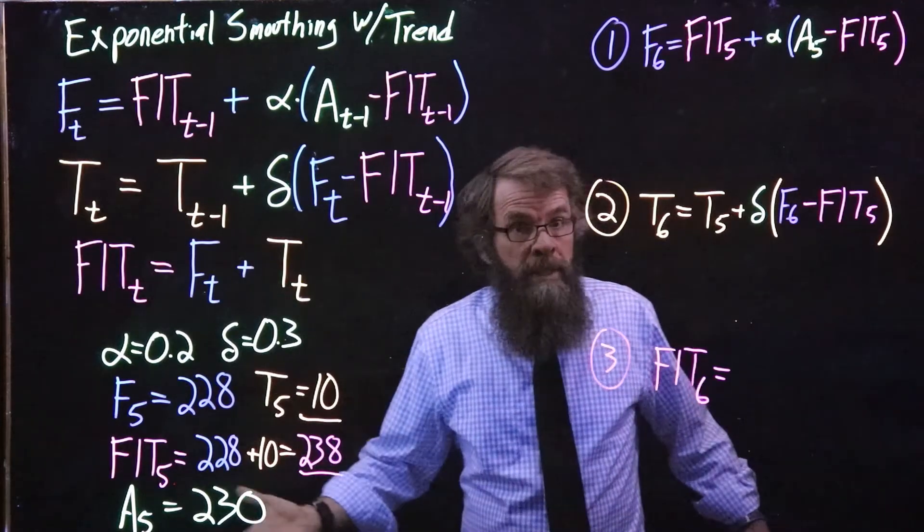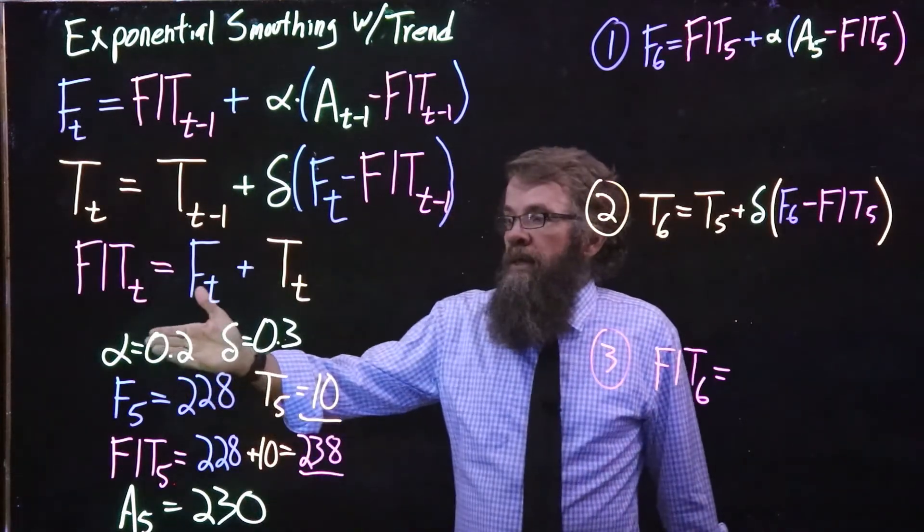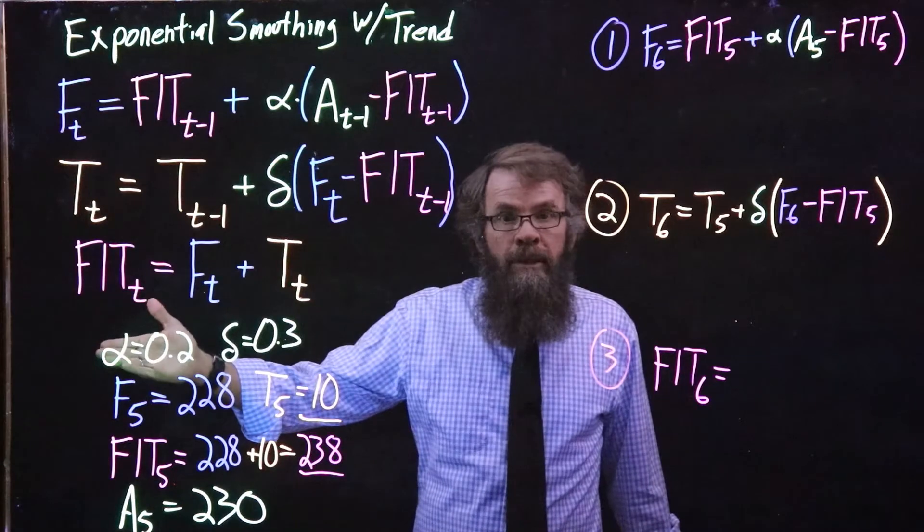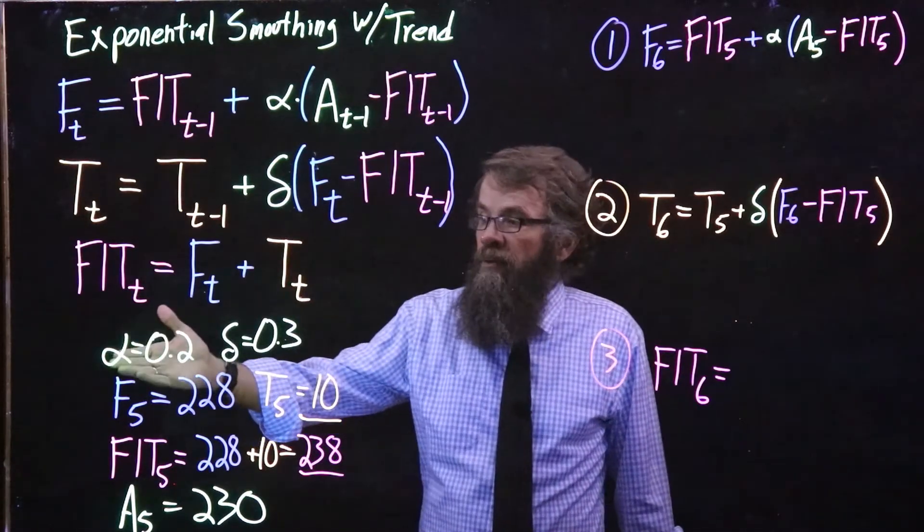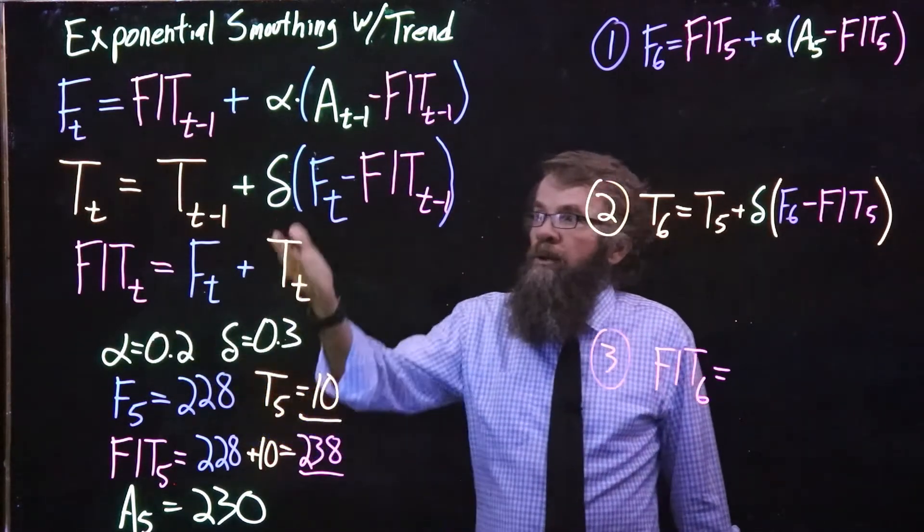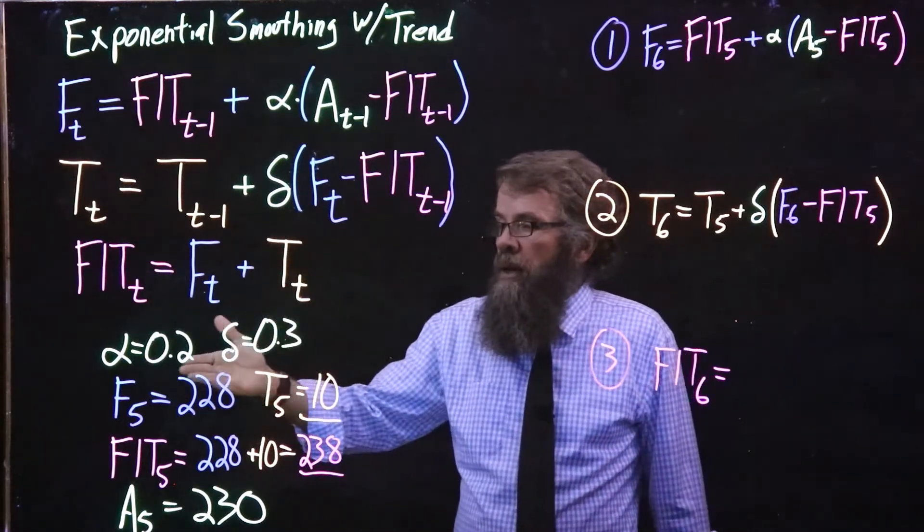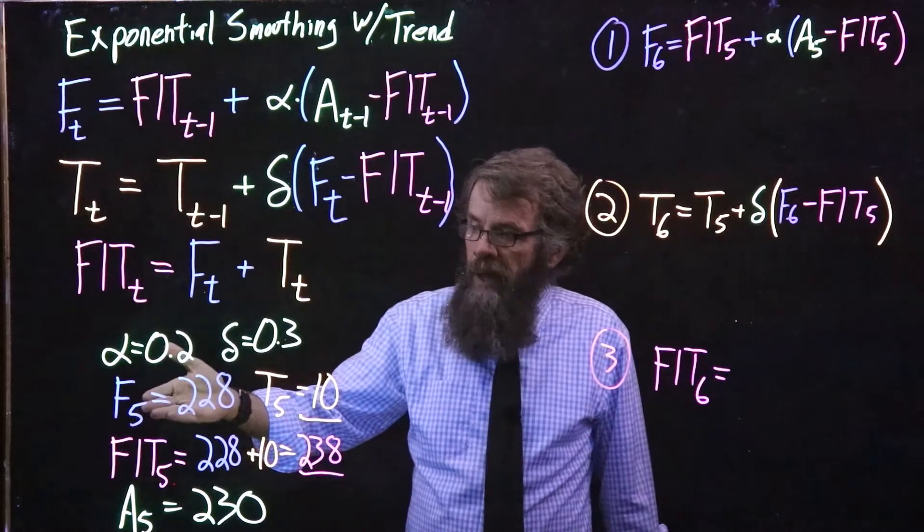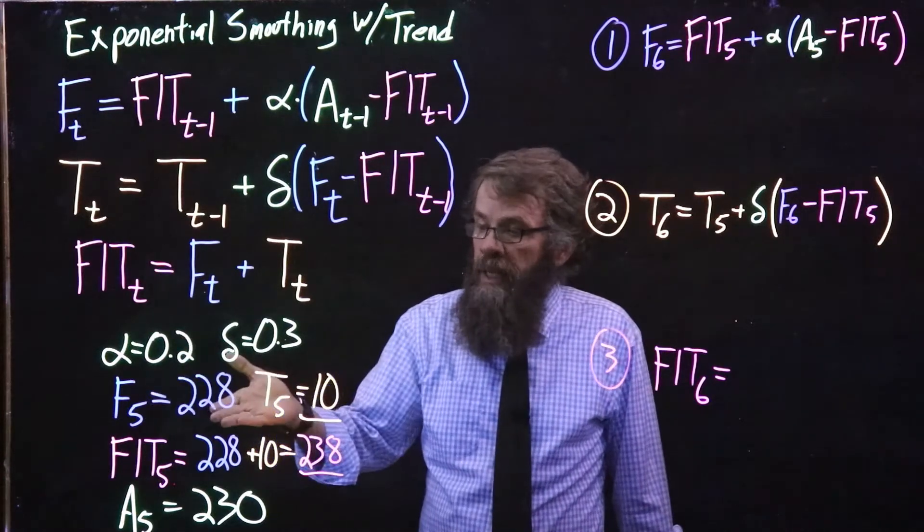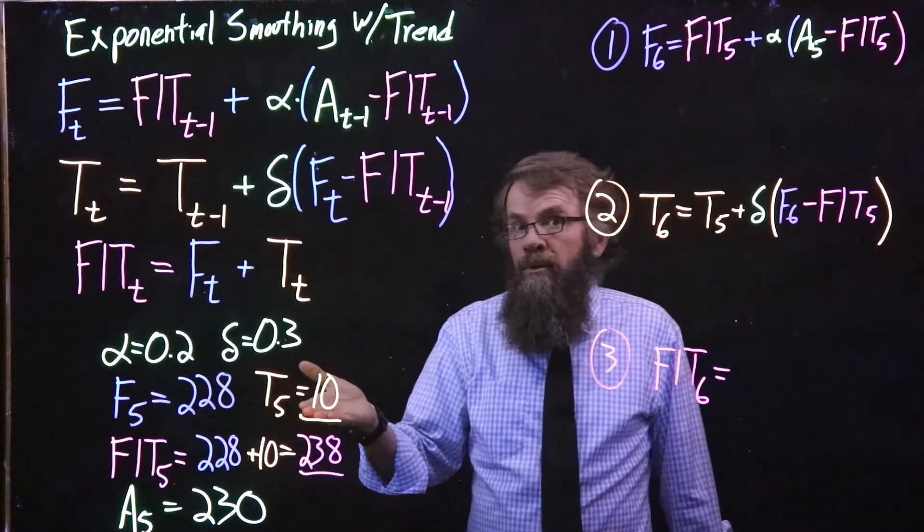So we're going to do an example here. Let's say that our smoothing coefficient for the level is alpha of 0.2, and for the trend our delta value is 0.3. Our value for the level from last period is 228, and our most recent estimate of the trend is 10.